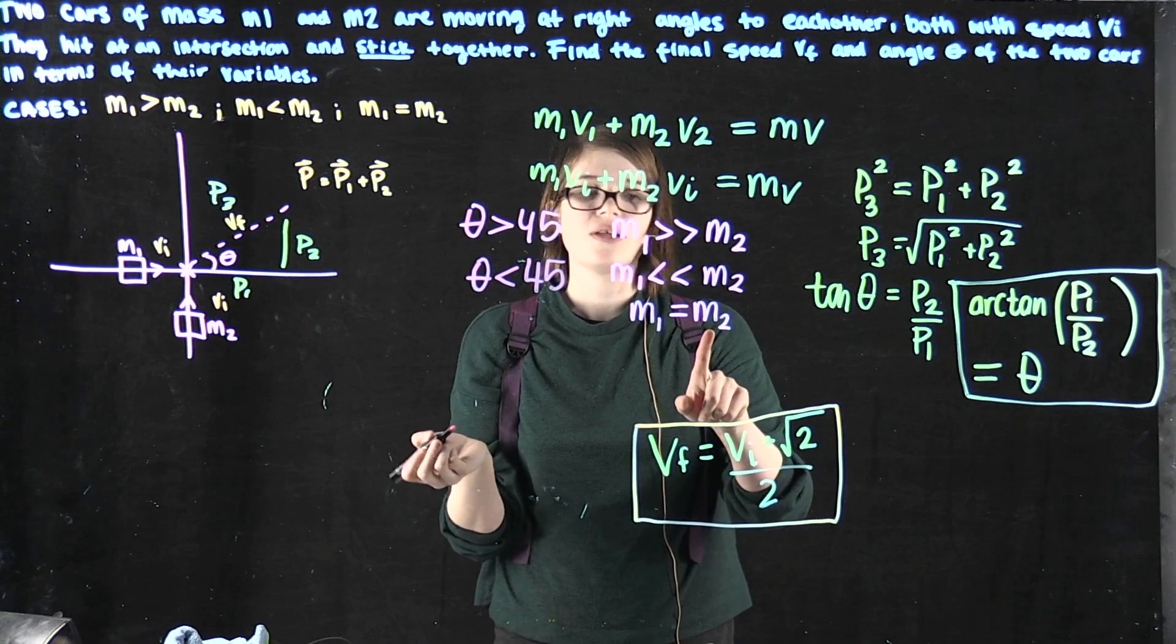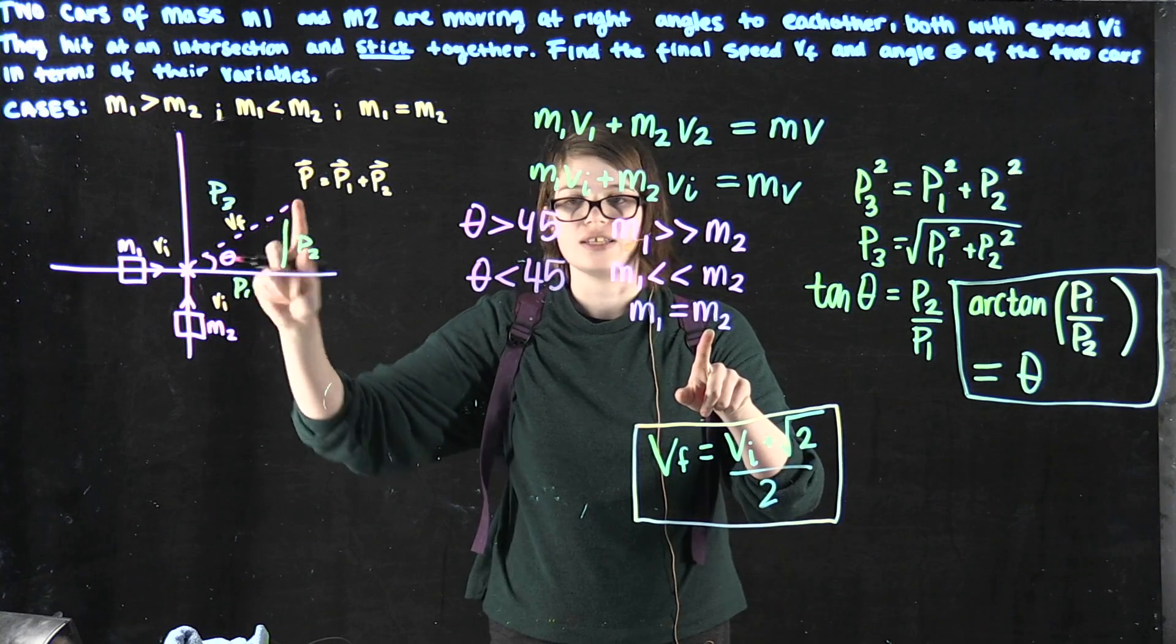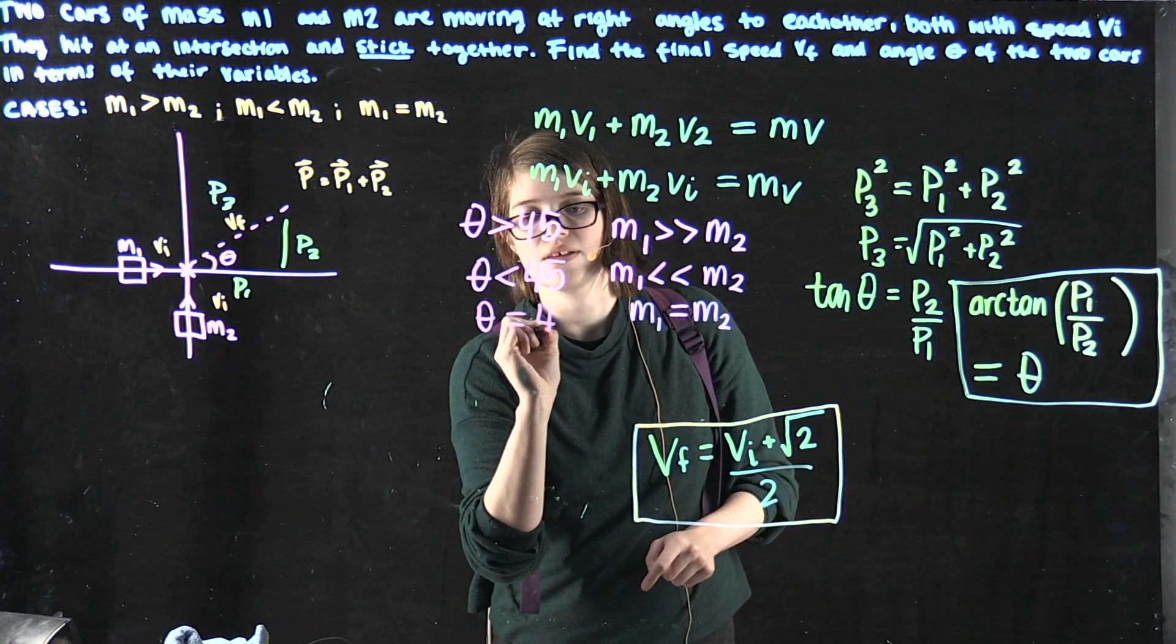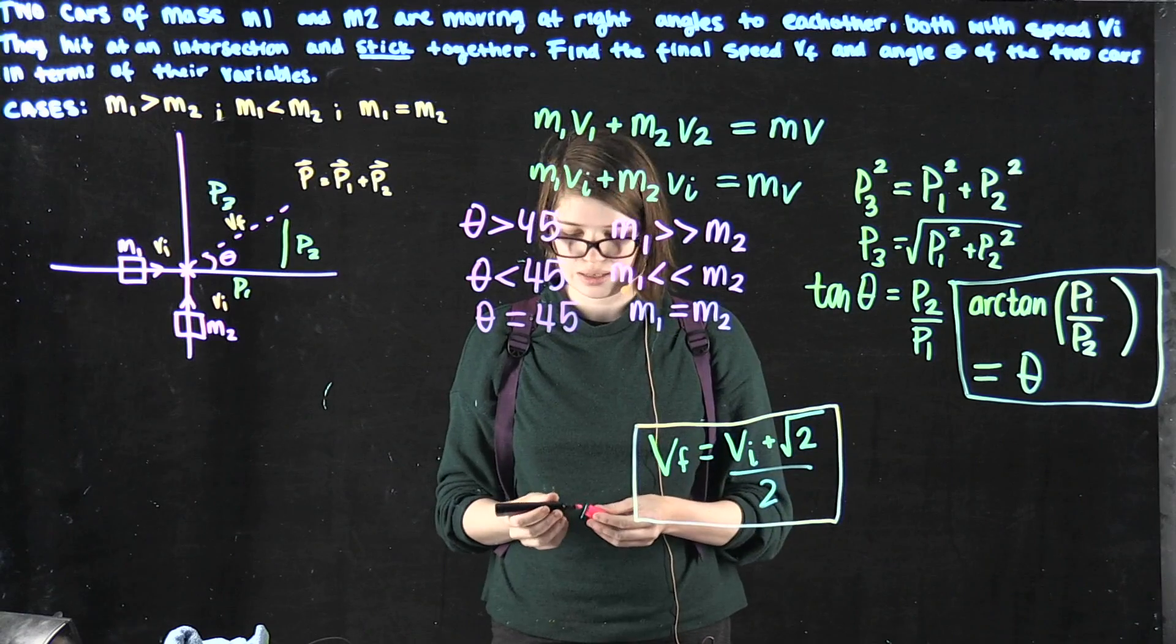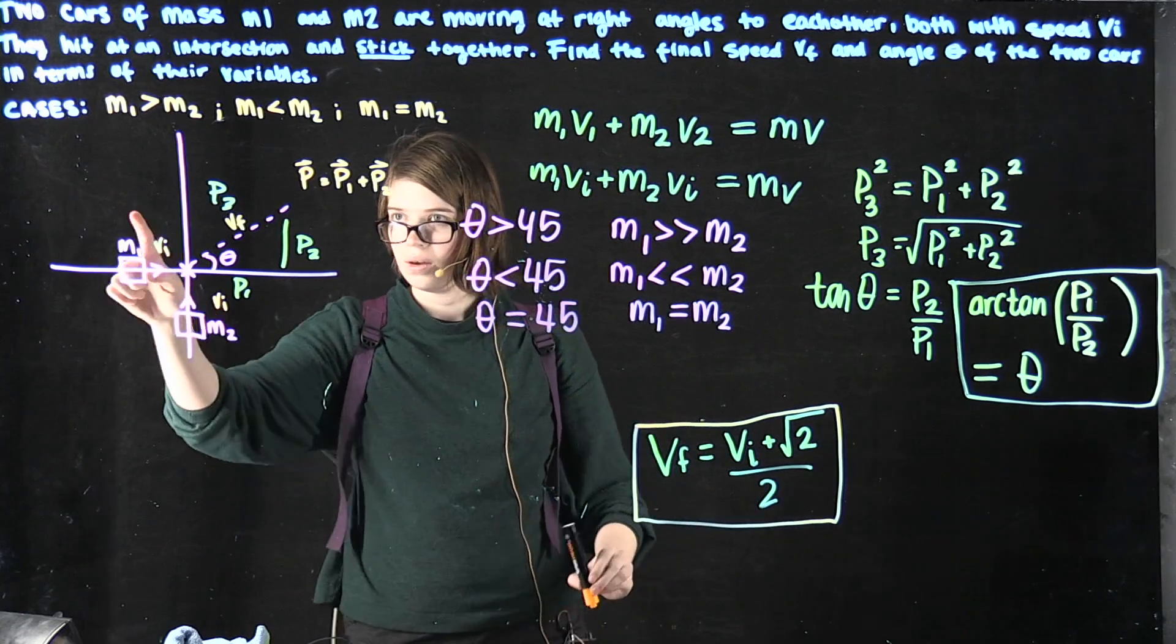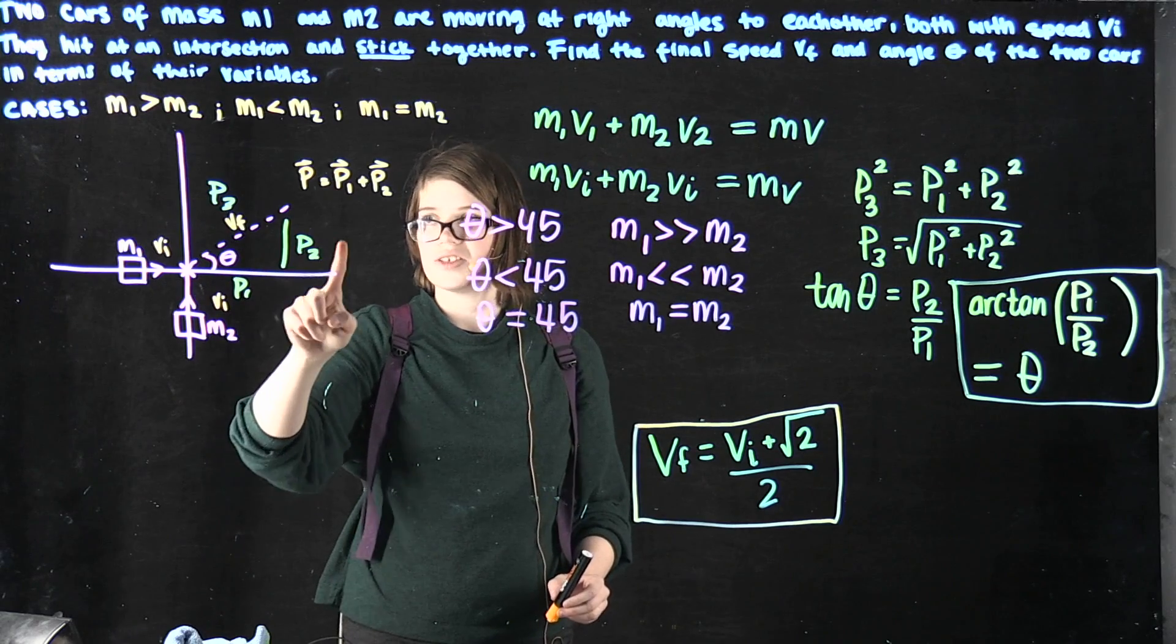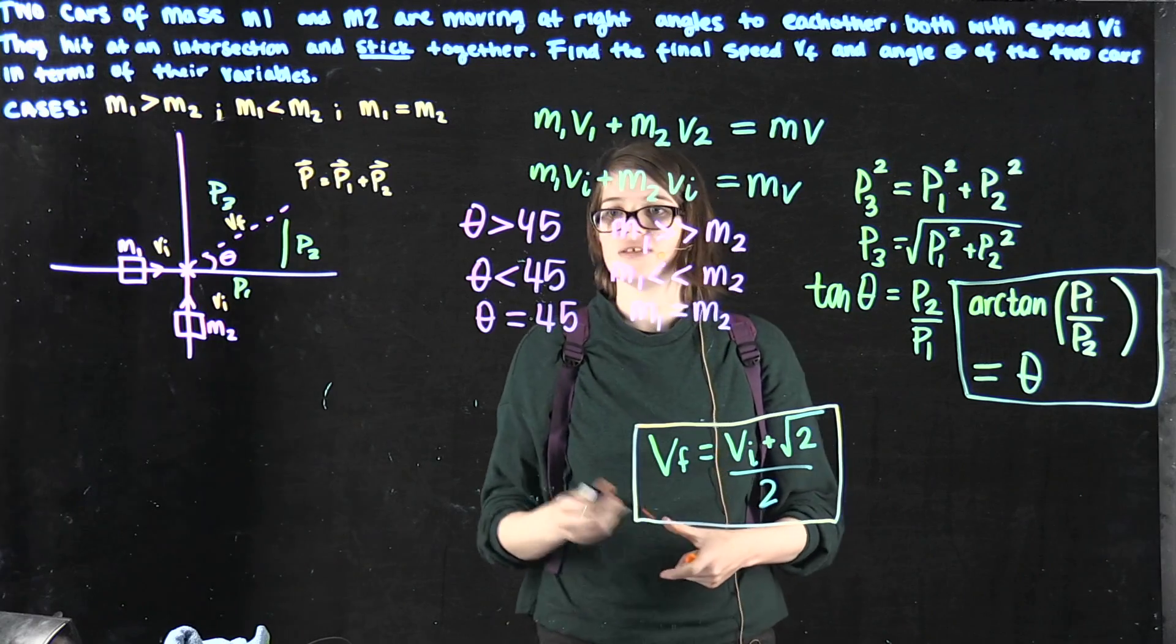If we have m1 equal m2, and they're both hitting at right angles giving a tangential velocity, theta would equal 45. Those are the values for all of our three cases, depending on our momentums of the first car, the second car, and our final momentum from the right triangle.